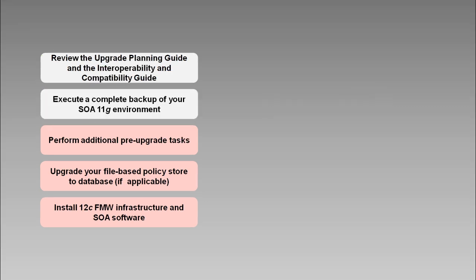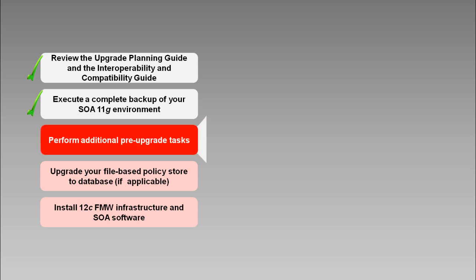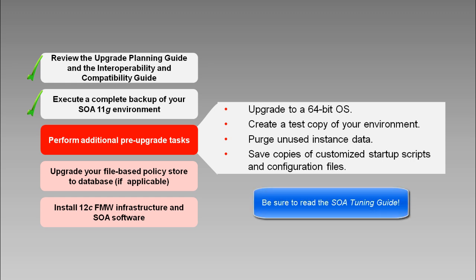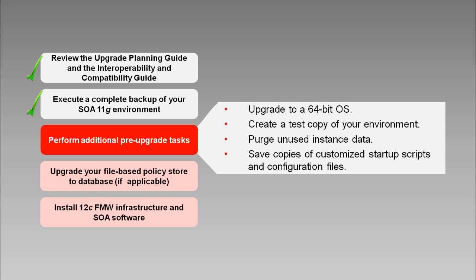There are a number of additional pre-upgrade tasks that are critical to perform at this stage. If you're using a 32-bit operating system, upgrade to a 64-bit environment and verify it's working properly. Create and upgrade a test copy of your production environment. The thread configurations in SOA 11G aren't carried over to 12C because 12C has shifted over to work managers for the most part. So read the SOA tuning guide and revisit your tuning settings, especially the work manager settings for SOA. Tuning is an iterative process where you tune, run benchmarks, and then retune. To minimize downtime, determine your tuning setting changes on this test system, and then apply those settings to your production system after upgrade.